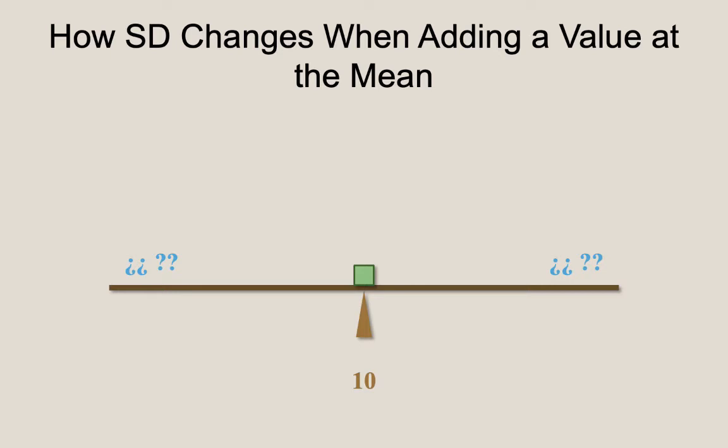For the second question, the standard deviation would go down because you are adding a number that equals the mean. So the amount the numbers are spread out from the mean is getting smaller on average for all values in the data set. Another way to think about this is that the deviation for the new value would be 0. And adding 0 to the sum of deviations is going to leave the numerator unchanged, but the total sample size and the denominator are getting bigger.